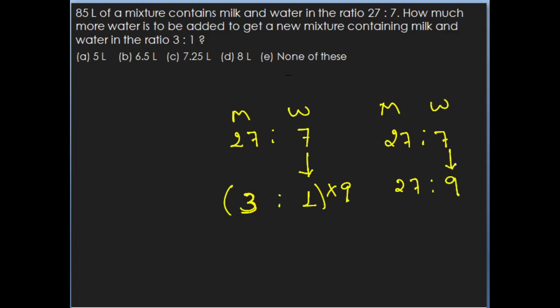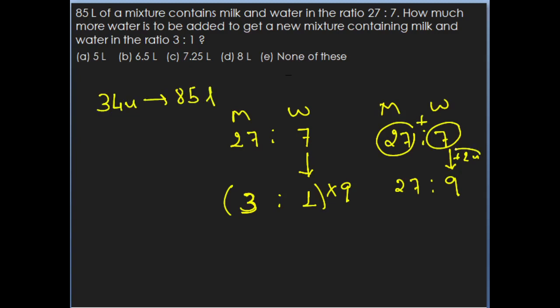So 2 units of water is added. But you need to say how much water is added in terms of liters. The initial mixture contains 85 liters. In terms of units, 27 units of milk and 7 units of water gives 34 units total, and 34 units equals 85 liters. So 2 units equals — 2 times 85 divided by 34 equals 5 liters. Therefore 5 liters of water is added to the mixture.